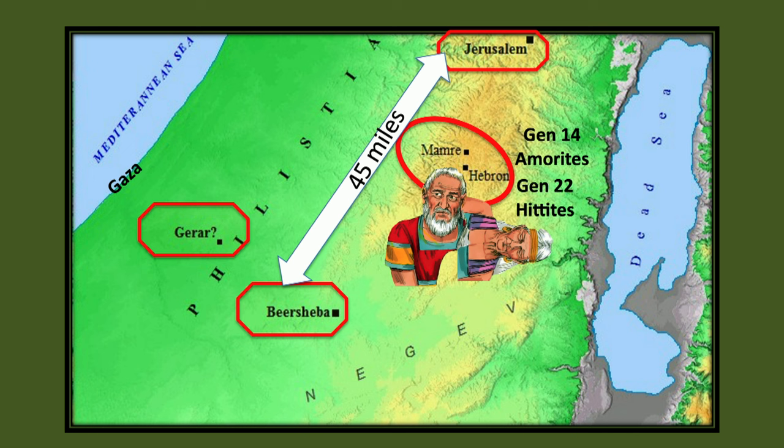A couple of things to bring out: in Genesis 14, the Amorites were controlling Hebron and they helped Abraham go recapture Lot. But now the Hittites are controlling it — they overthrew the Amorites. The Hittites just acquired this land through war, and here Ephron is charging an exorbitant amount for land that didn't cost them anything, which is quite fascinating.